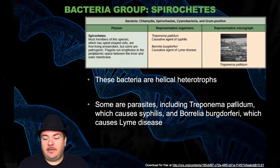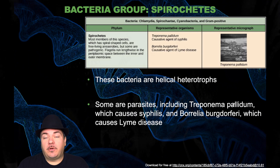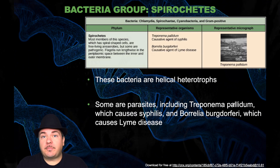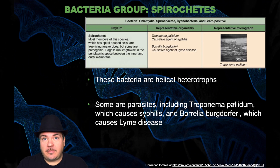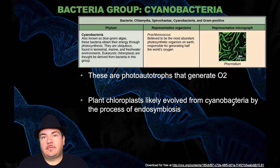Next phylum is the spirocetes. These have a helical shape. Some of these are parasites, including the one that causes syphilis and the one that causes Lyme disease.